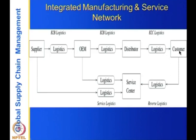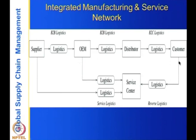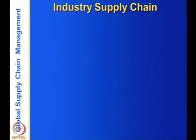Once the customer gets a product like a car, computer or similar item and requires servicing, there are service centers. The customer takes the product to a service center, which may get spare parts from the manufacturer or suppliers, services the product, and returns it to the customer. This diagram shows forward logistics, service logistics, and what is also called reverse logistics.